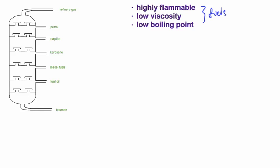As you go down the tower, the hydrocarbons near the lower end are much longer chain hydrocarbons. They are less useful as fuels and have many fewer uses than the hydrocarbons near the top.